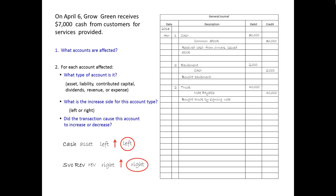We're ready to journalize. Leave a blank row after the previous entry. Enter the day. Enter cash — the account getting the left side of the entry — with $7,000 in the left number column. Enter service revenue indented to the right, with $7,000 in the right number column. Enter a brief explanation.